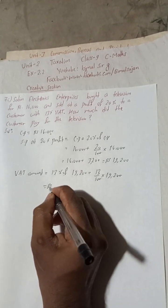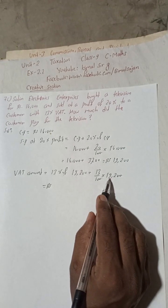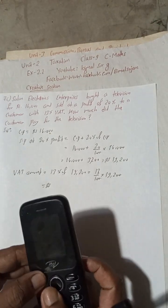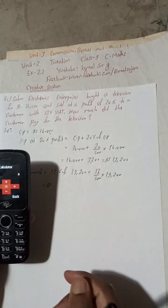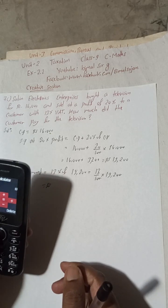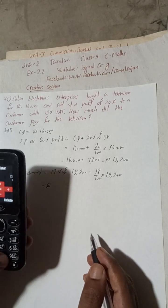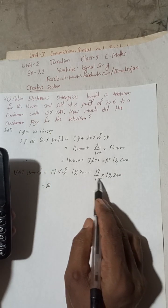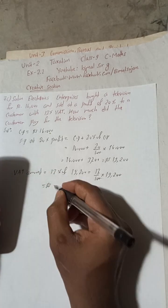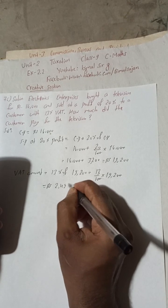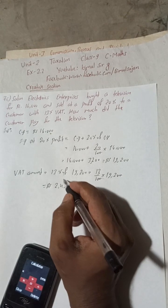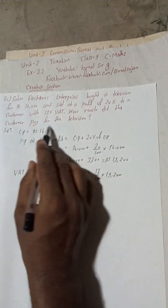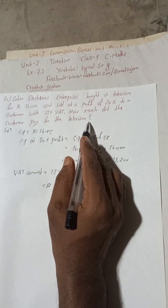19,200, so 13% means divided by 100. Of means into 19,200. Two zero cancel. So 13 into 192. This will be 2,496. 2,496 is the VAT amount.